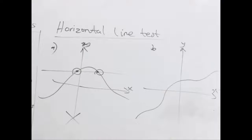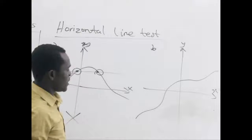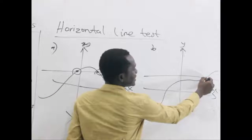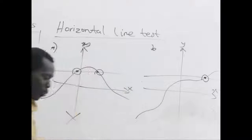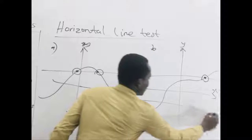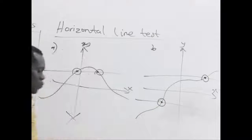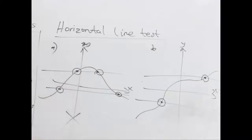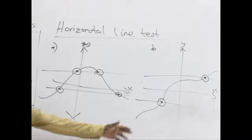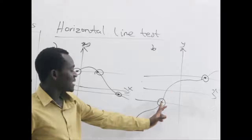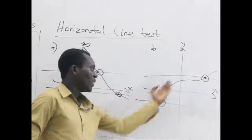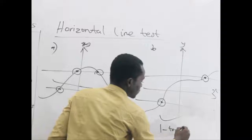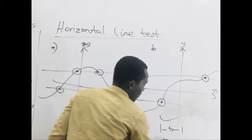Taking the second graph, graph B: when I draw a horizontal line, it cuts the graph at exactly one point. Drawing another one also gives exactly one point. Since graph B has only one point intersecting with the horizontal line each time, we can say this function is a one-to-one function.